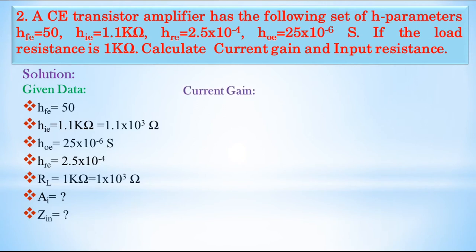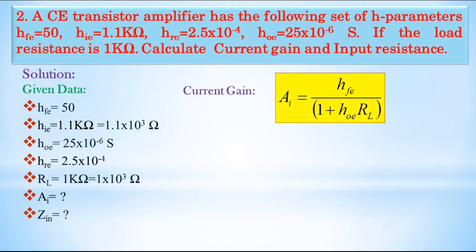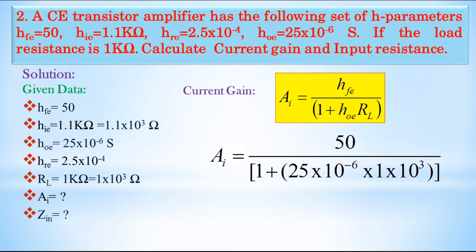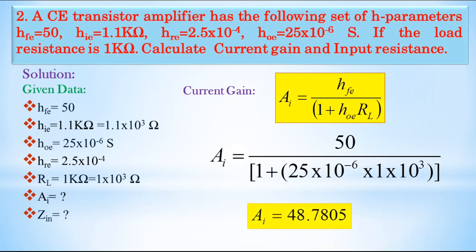Let us start with current gain. AI = HFE / (1 + HOE × RL) = 50 / (1 + 25 × 10⁻⁶ × 1 × 10³). By calculating this, we get current gain AI = 48.7805. Notice that it does not carry any unit.